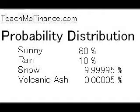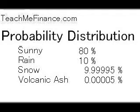Let's say you're going to make a probability distribution for the weather this weekend. Let's say that you thought there was an 80% probability that it was going to be sunny, a 10% probability that it was going to rain, a 9.99995% chance that it was going to snow, and a 0.00005% chance that there was going to be volcanic ash.